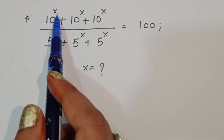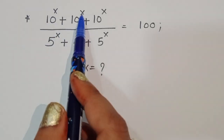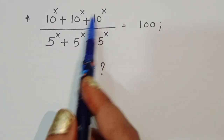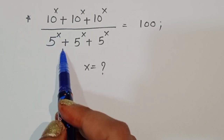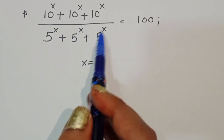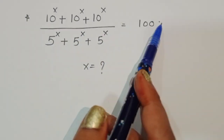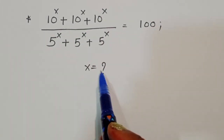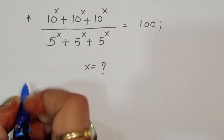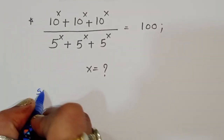The question is: 10 power x plus 10 power x plus 10 power x, divided by 5 power x plus 5 power x plus 5 power x, is equal to 100. We have to find out the value of x.